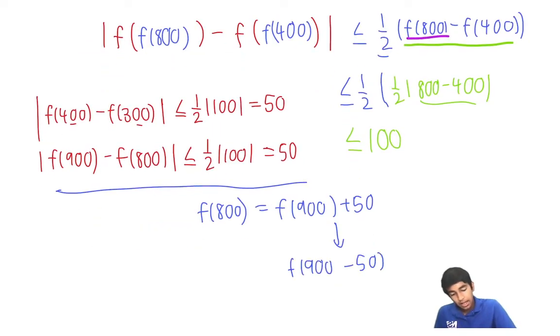It can be anything inside here f(900) minus 50, right? Because this thing is... Oh, sorry. f(900) minus 50 on the outside. Because, remember, this thing is the absolute value.